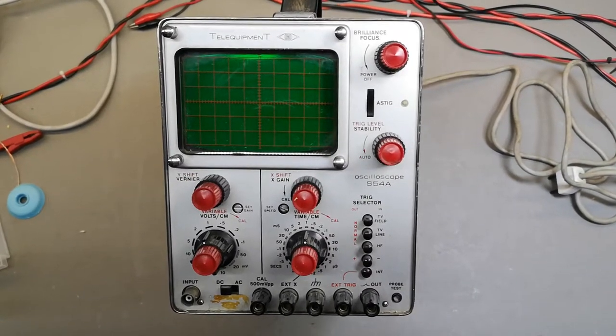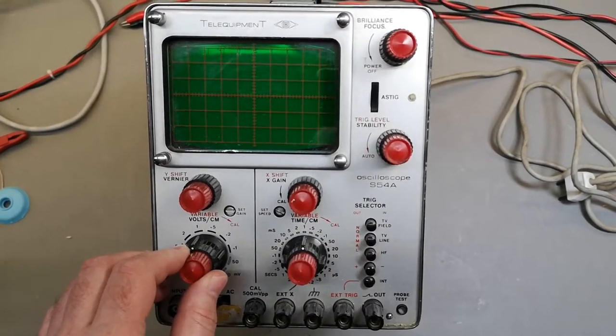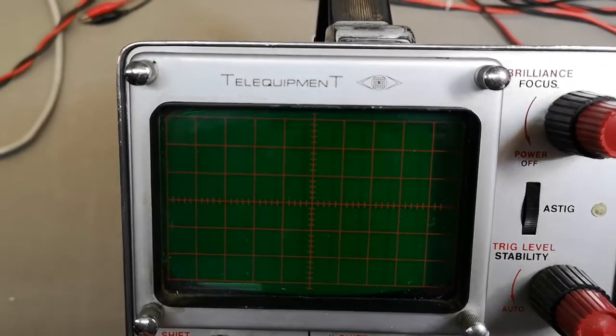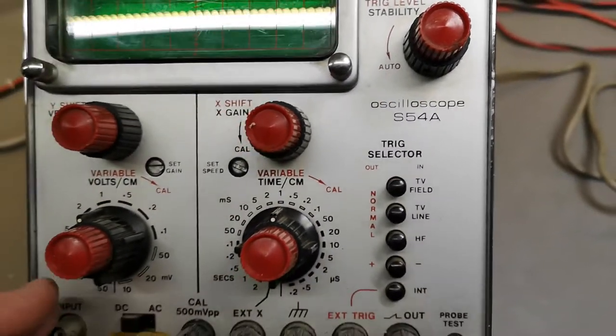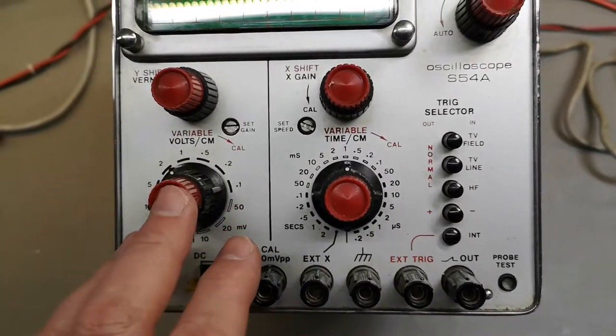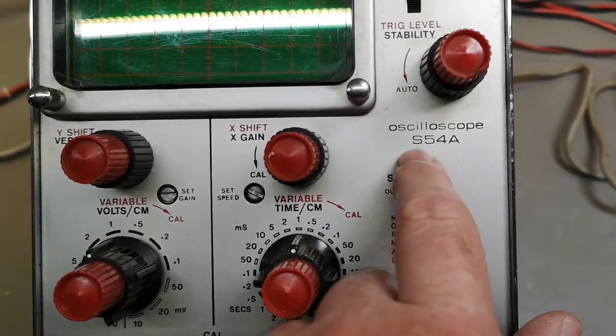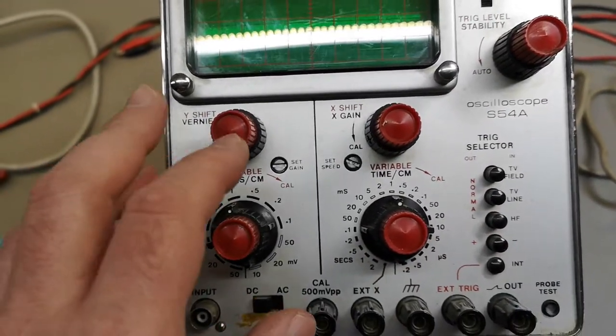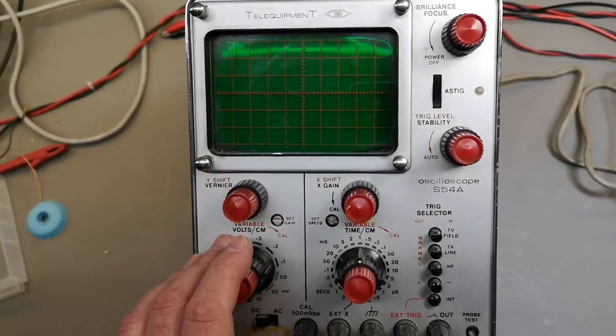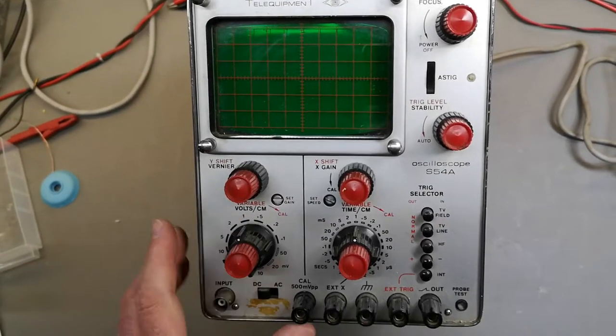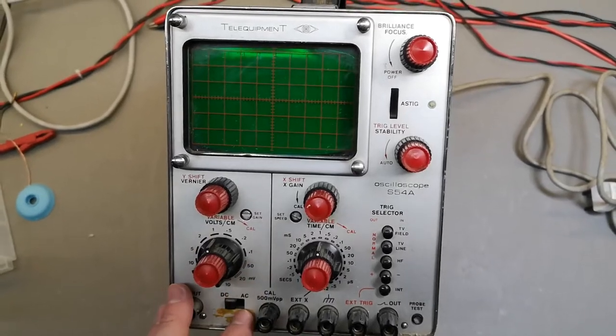Welcome to another teardown video. This time it is a Tele Equipment S54A, a single channel scope. I believe this design is from 1968 and it should contain a few tubes and a lot of transistors.